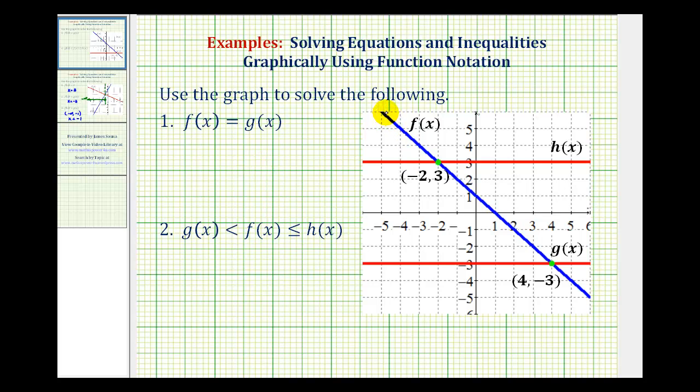Since this is f of x and this is g of x, this point of intersection represents when these two functions are equal to each other, where the x coordinate would be the location and the y coordinate would be the common function value.